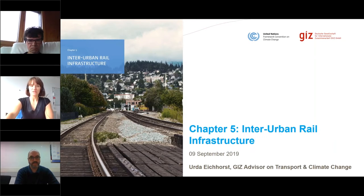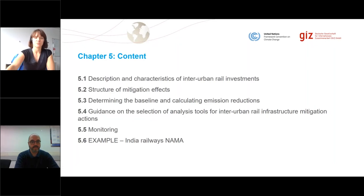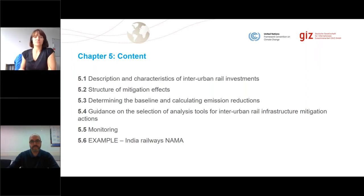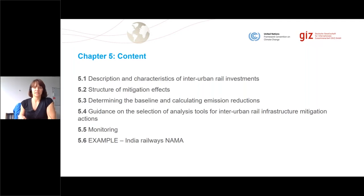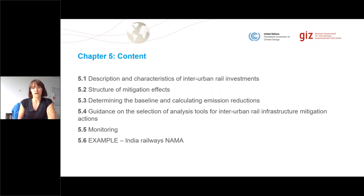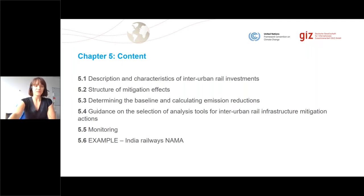I'd like to give you a glimpse of the transport volume — what can you expect from it, in this case Chapter 5, which looks at inter-urban rail. All of the chapters are organized in the same structure, starting with a description and characteristics of the mitigation action type. Inter-urban rail investments have a large mitigation potential by substituting trips that might otherwise be done by cars, trucks — if we talk about freight transport — or by aviation, especially when we talk about high-speed rail connections. We believe that inter-urban rail investments are one important measure in the whole policy package of mitigating transport emissions.